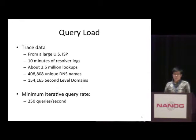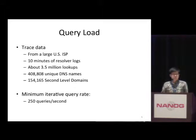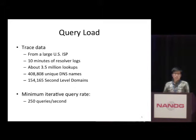The query trace we used lasts for 10 minutes. It contains about 3.5 million DNS lookups, involves 400,000 unique DNS names, belonging to 150,000 second-level domains under the .com domain. The average iterative query rate between the cache resolver and the .com domain is about 250 queries per second. This query rate could be higher if the cache resolver doesn't have a large cache and the domains set the TTL of the DNS records to a small value.